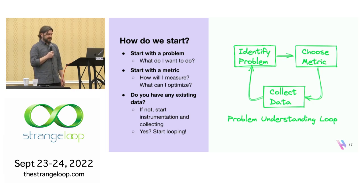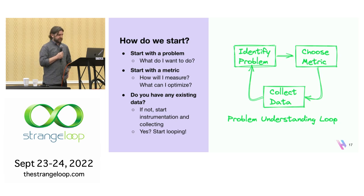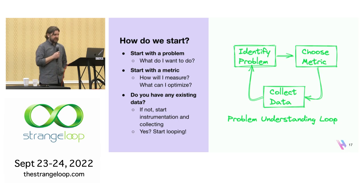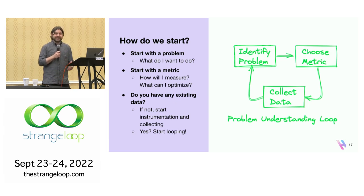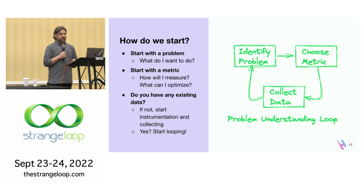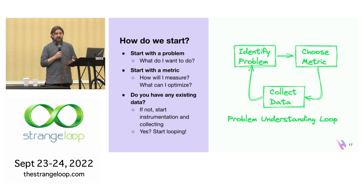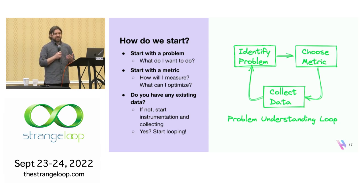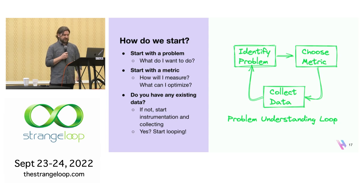I'm going to zoom in on personalization and how machine learning factors in — how we build infrastructure to make this process smooth. Since it's the Strange Loop Conference, I'll be focusing on those loops. The first is what I call the problem understanding loop. You need to start with a problem to solve, a metric to measure your progress, and some existing data to form the basis of a model. You'll go through a few iterations before you feel comfortable with your baseline problem, metrics, and data.